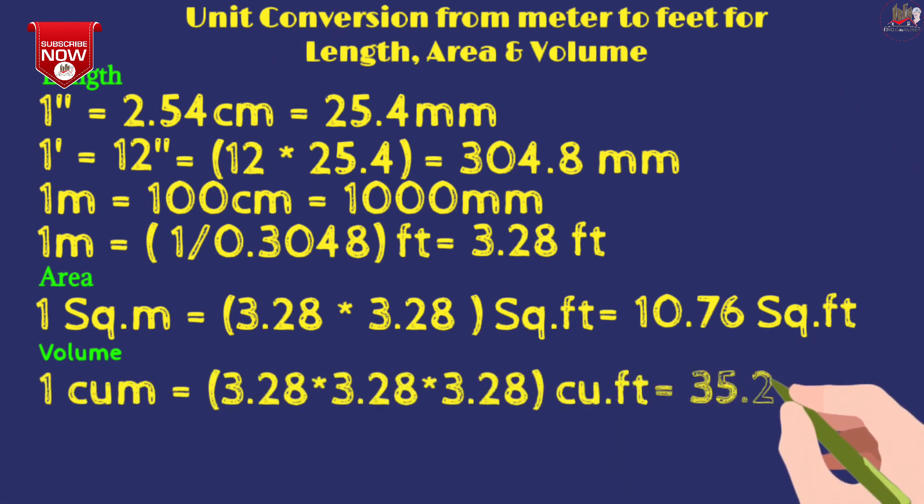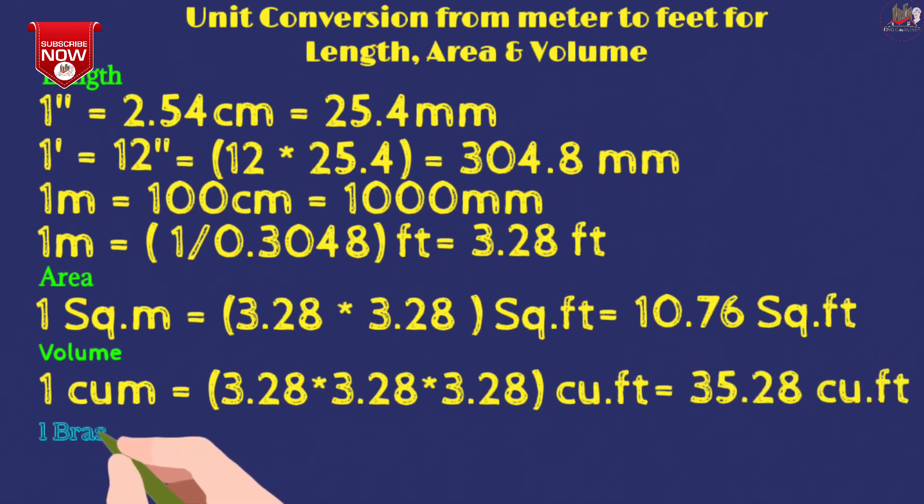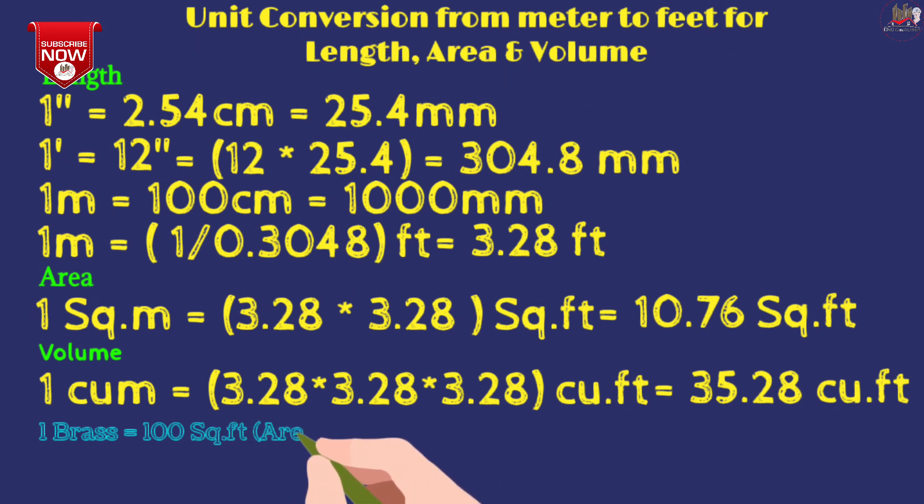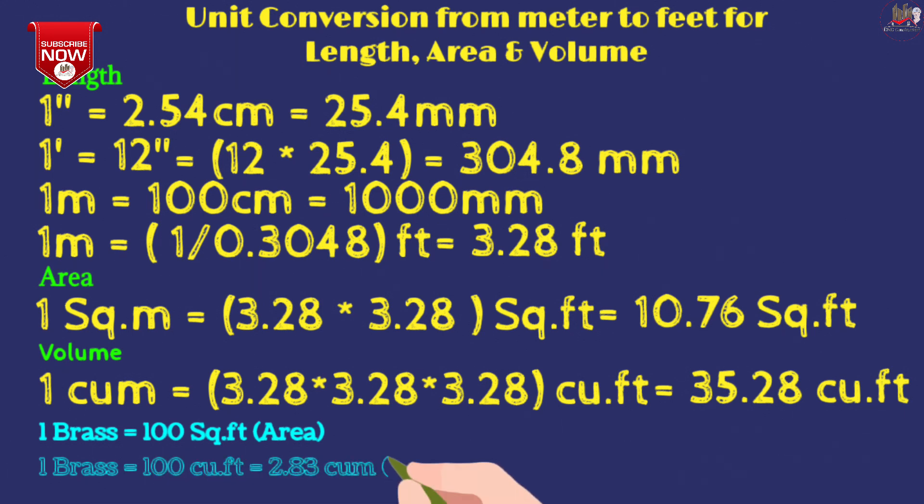This is the unit conversion of length, area, and volume. And friends, you should know 1 brass is 100 square feet for area, and 1 brass is 100 cubic feet for volume, and 1 brass is 2.83 cubic meters. Thank you so much friends for watching this video.